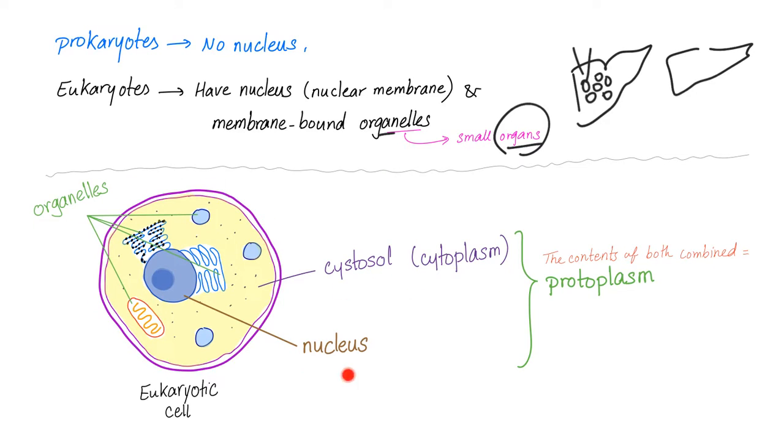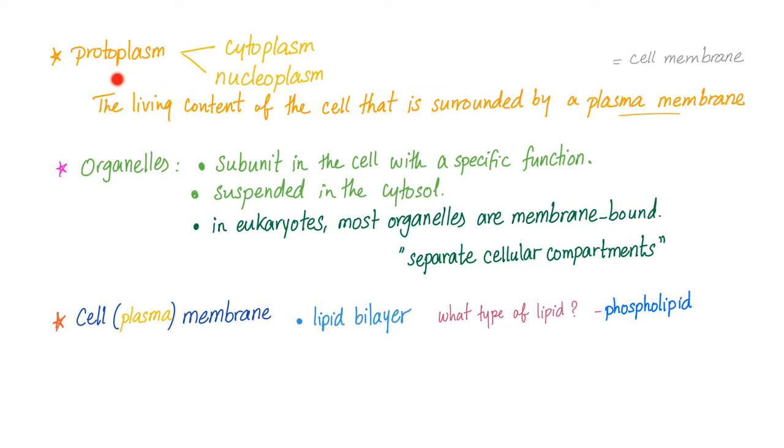The cytoplasm plus the nucleus together are called the protoplasm. So protoplasm includes the cytoplasm and nucleoplasm - the living content of the cell that's surrounded by a plasma membrane is the protoplasm. Organelles are subunits in the cell with a specific function.